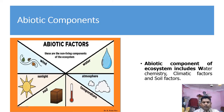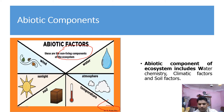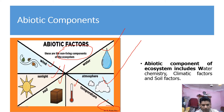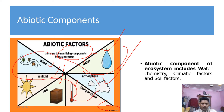Abiotic factors are those non-living components of an ecosystem. These non-living components — not made of living things — include water, atmosphere, temperature, soil chemistry, sunlight, and wind. We also include the study of water chemistry, climate, and soil. This is known as the abiotic study.